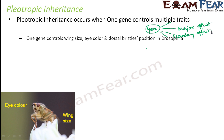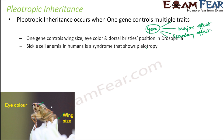Let us look at examples. The same gene controls the wing size, eye color, and dorsal bristles position in Drosophila. So eye color, wing size, and the position of the bristles on the dorsal side — all of these are controlled by the same gene. Similarly, if you look at the sickle cell anemia disease in human beings, that is also caused by a gene which is pleiotropic in nature.